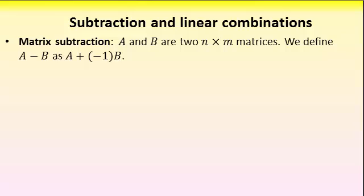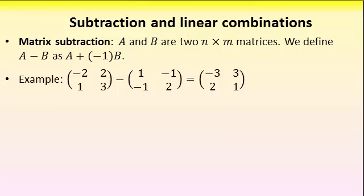But in effect, it simply means that we do subtraction element by element. So here's an example. I subtract these two matrices. I simply do it element by element. For the first one, I get minus 2 minus 1. That's minus 3 at the top left on the right hand side. And then cycle through the other three.